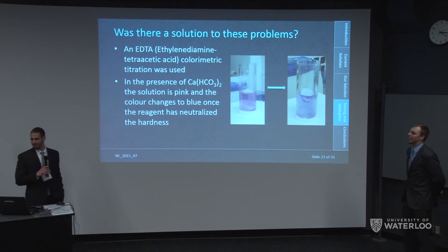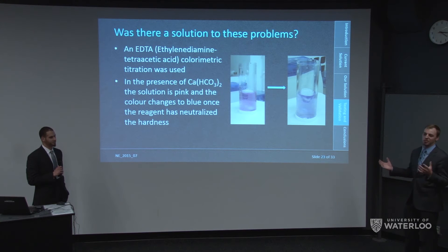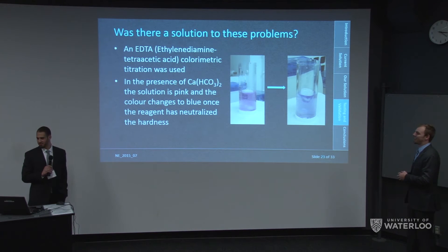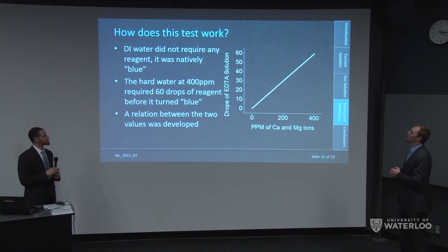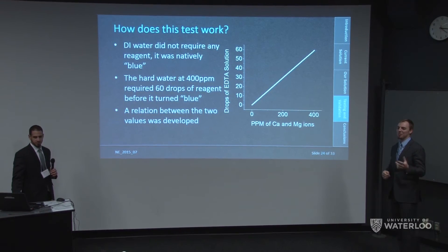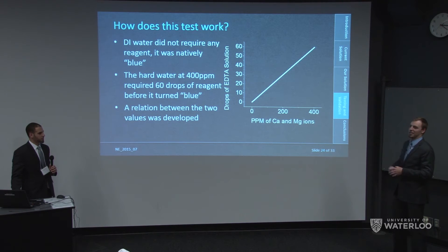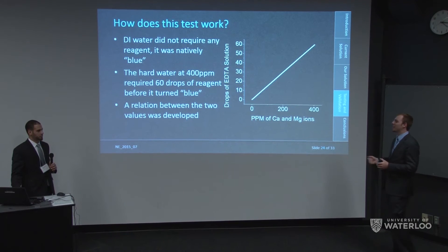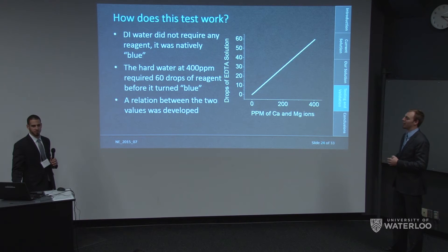We discovered EDTA colorimetric titration, which shows the sample as pink in the presence of calcium carbonate and blue after the calcium has been depleted. For hard water, it took about 60 drops to change color from pink to blue, representing a hardness level of approximately 400 ppm of calcium carbonate. DI water turns blue immediately at zero drops, whereas hard water required 60 drops.